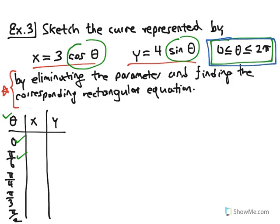Because our parametric equations are defined in terms of cosine and sine, we can choose special angles for the parameter θ: 0, π/6, π/4, π/3, π/2, and so on. It's easy to evaluate sine and cosine at these angles.